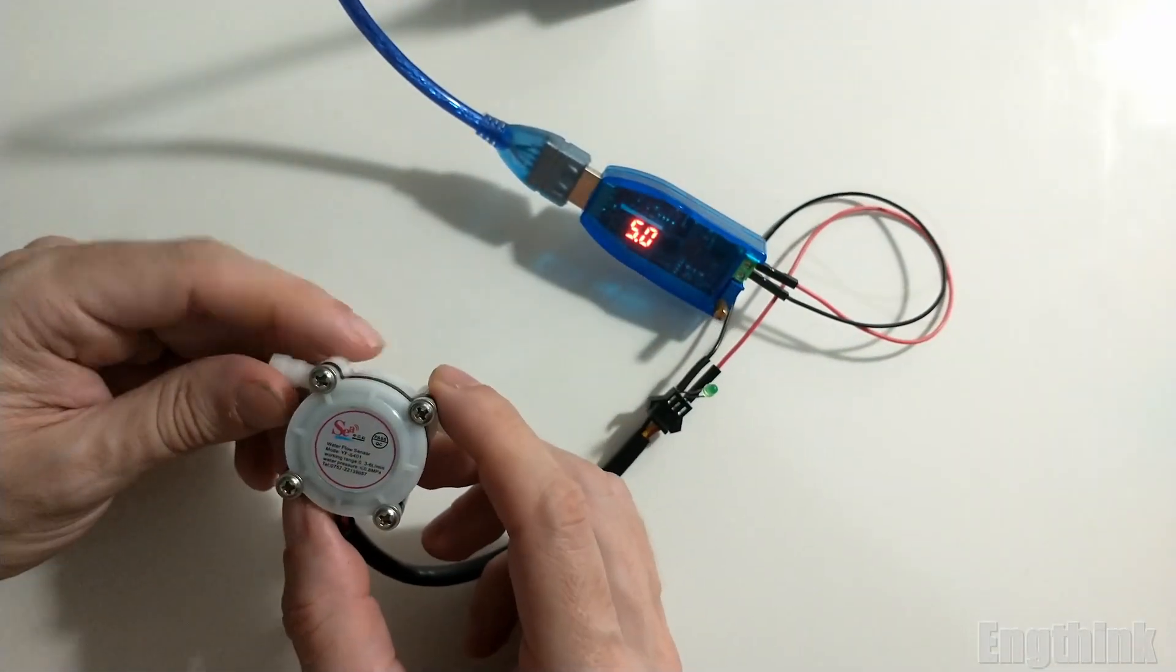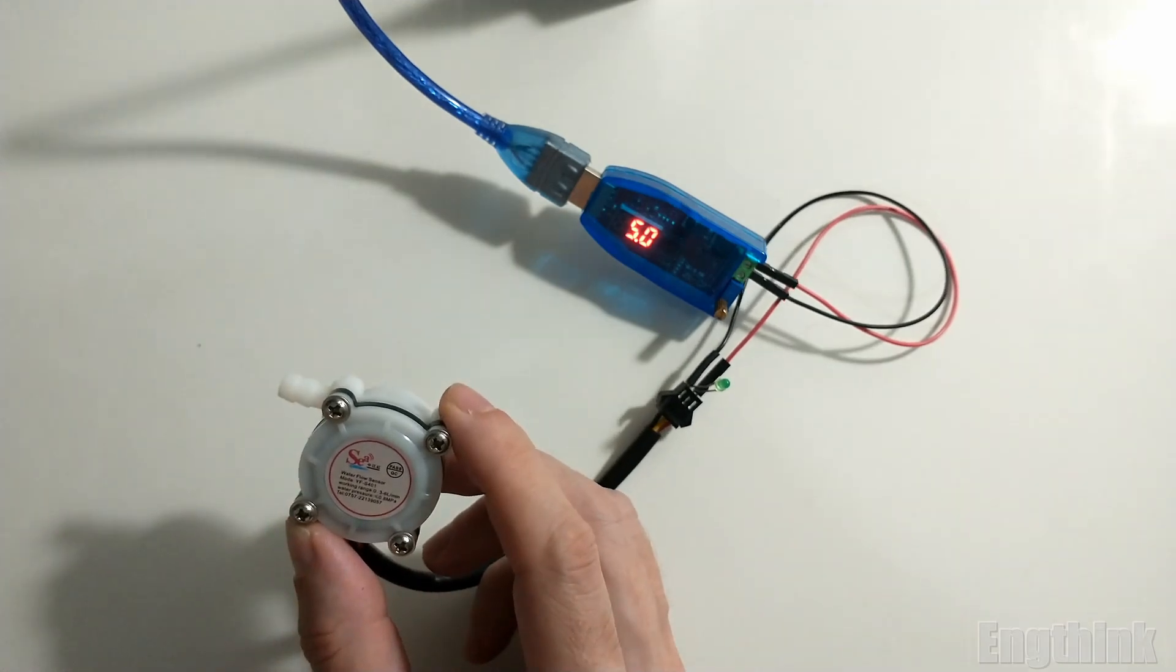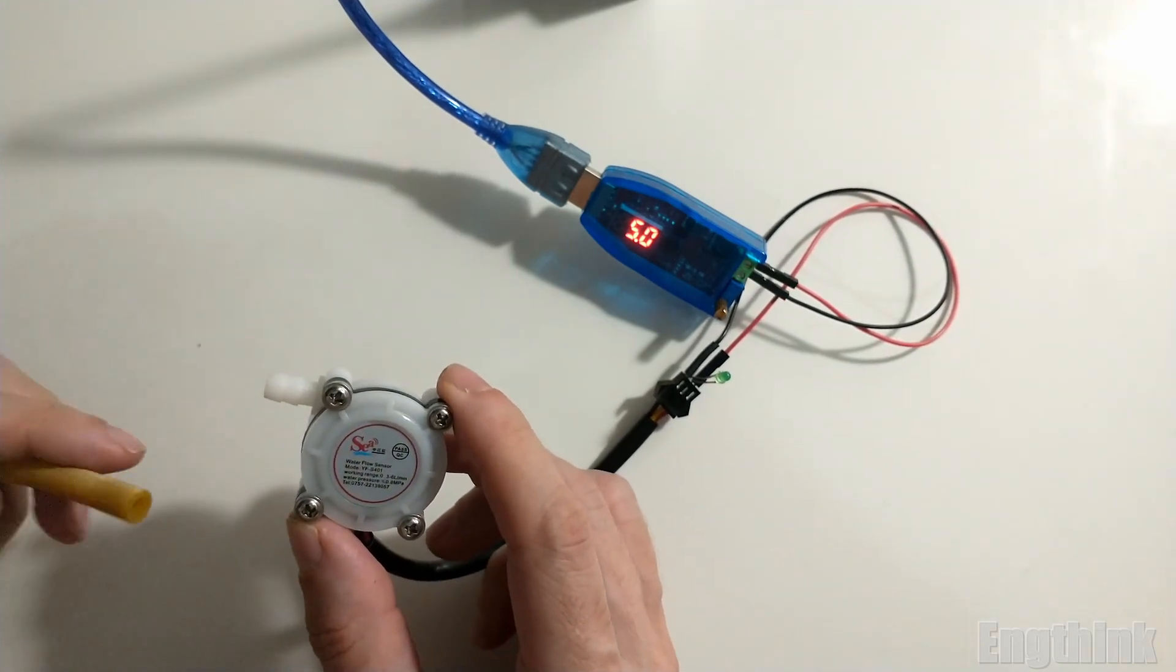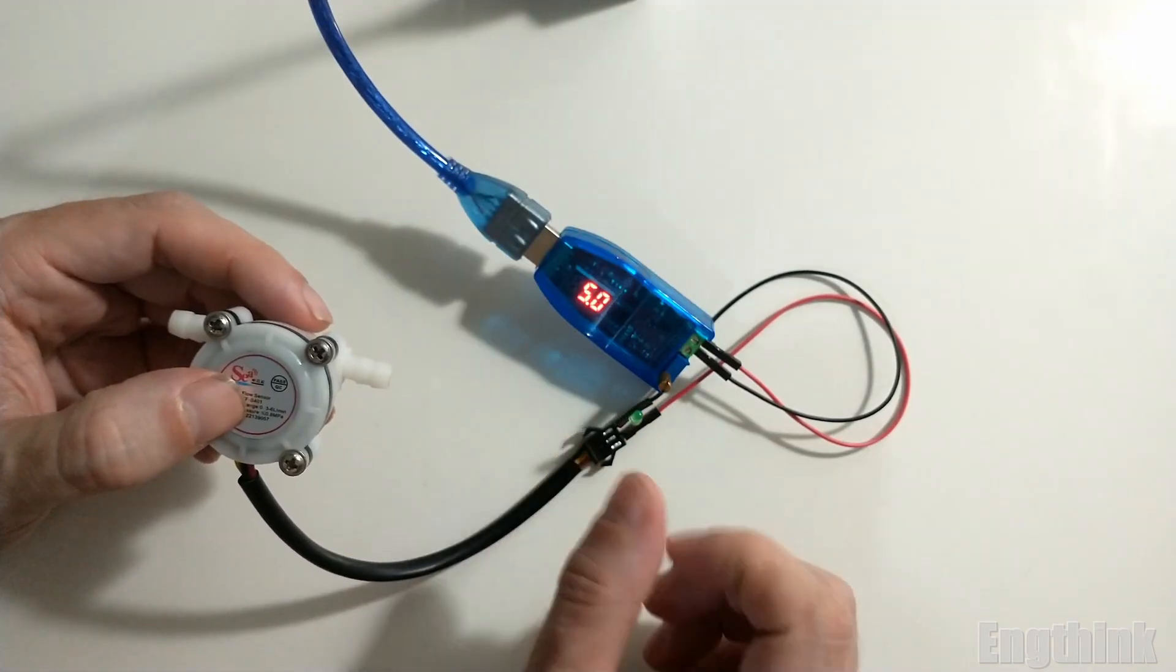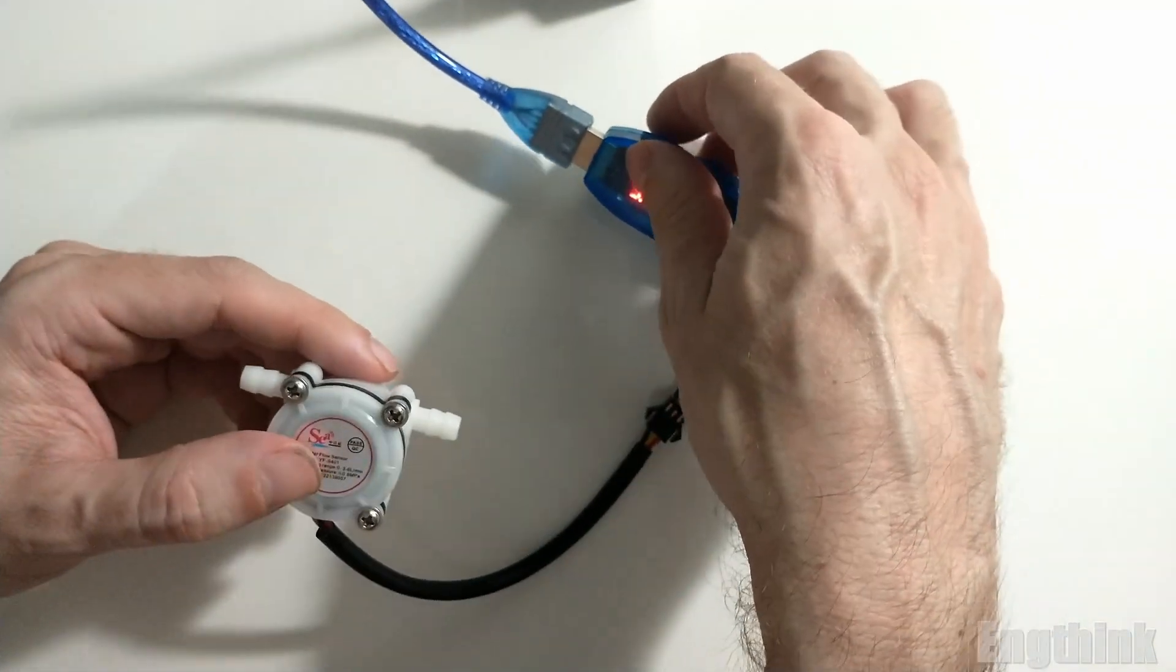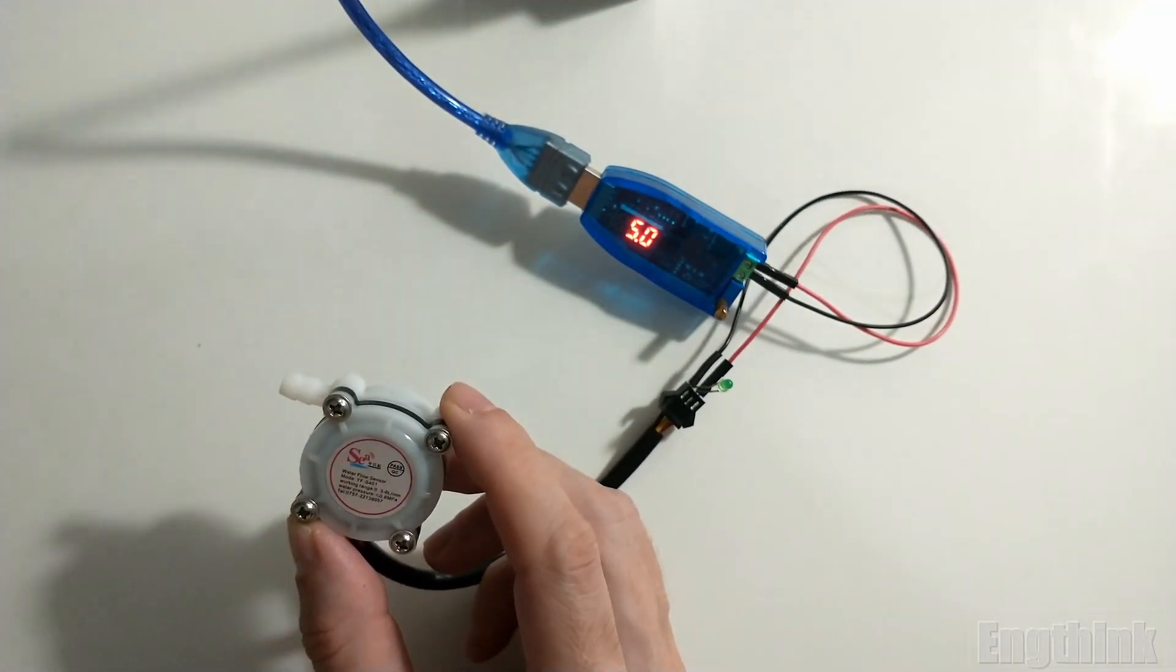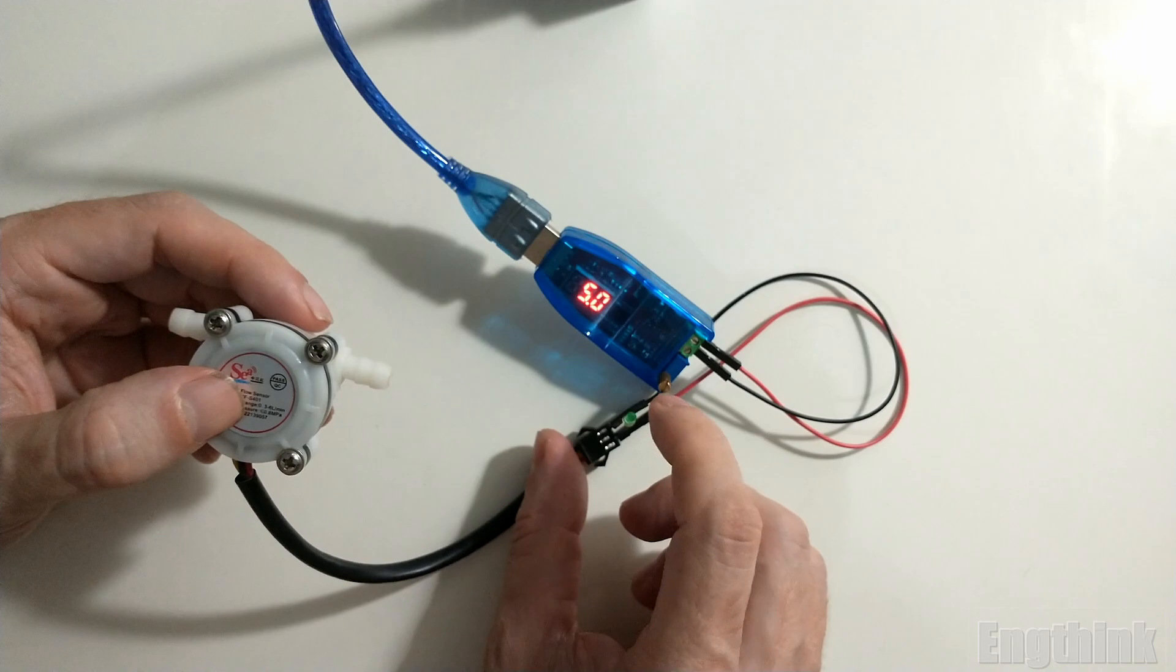Another option to generate flow through the sensor, instead of using water, is to blow air through the sensor. The behavior will be almost the same as water, and it will be possible to see the LED blinking according to the flow rate.